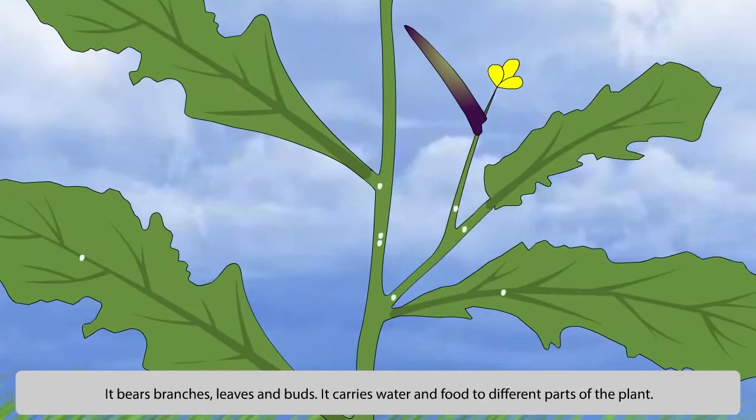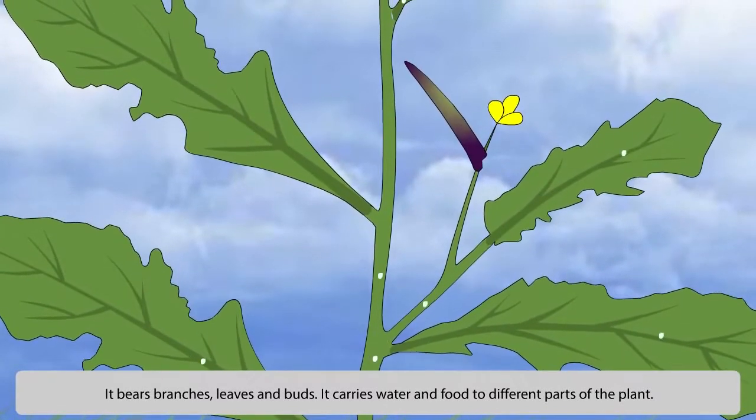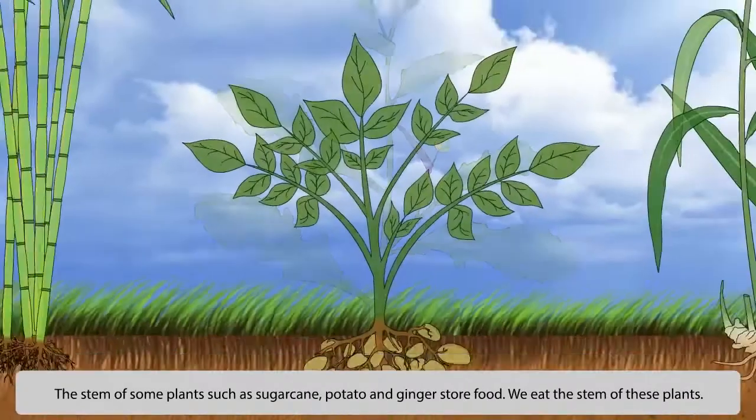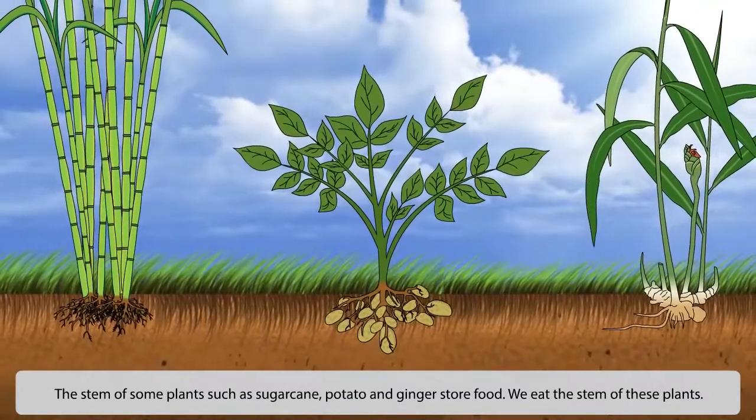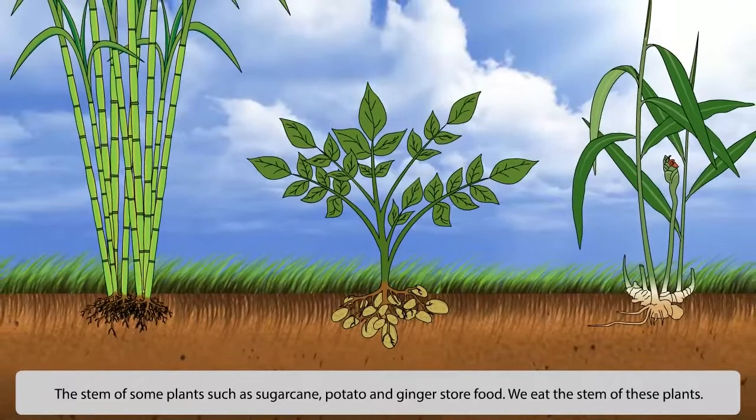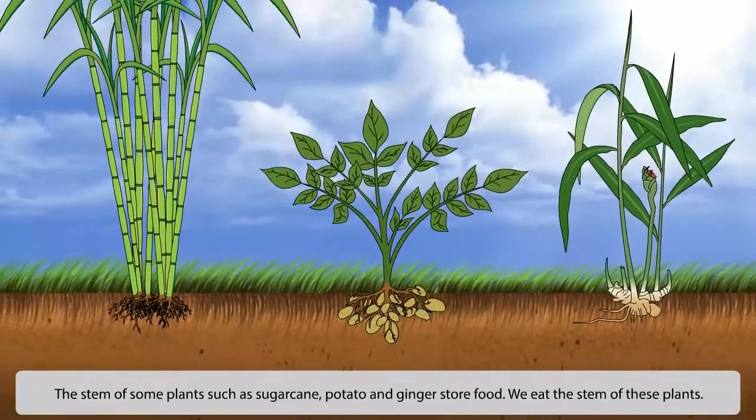It bears branches, leaves and buds. It carries water and food to different parts of the plant. The stem of some plants such as sugarcane, potato and ginger store food. We eat the stem of these plants.